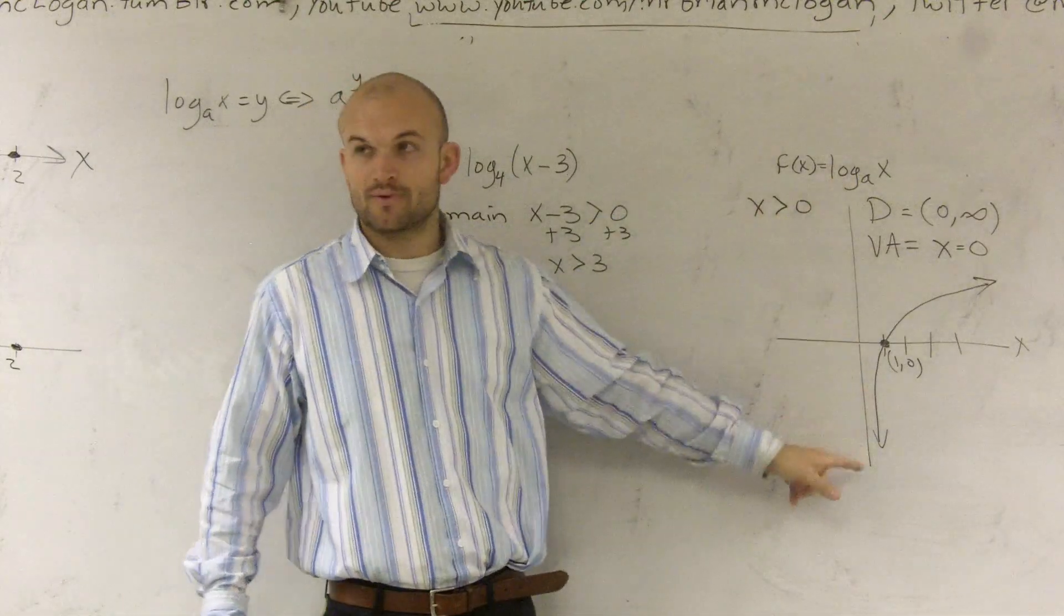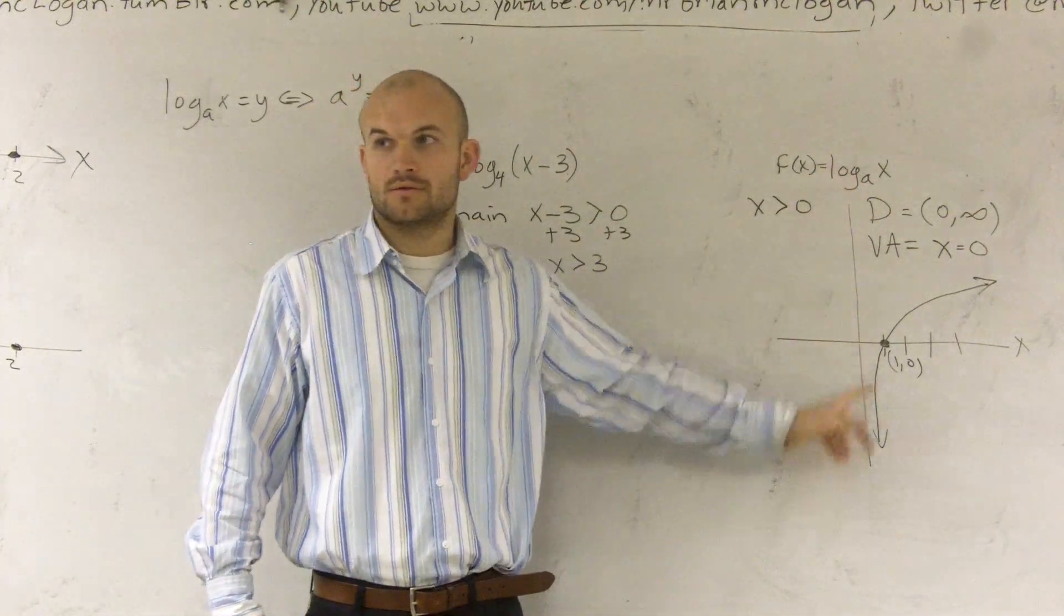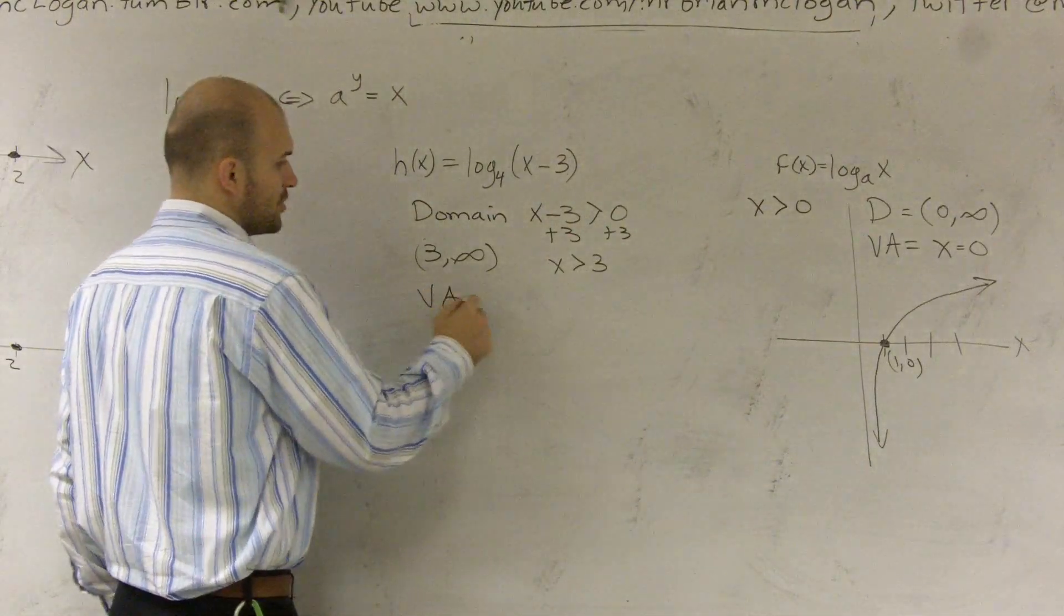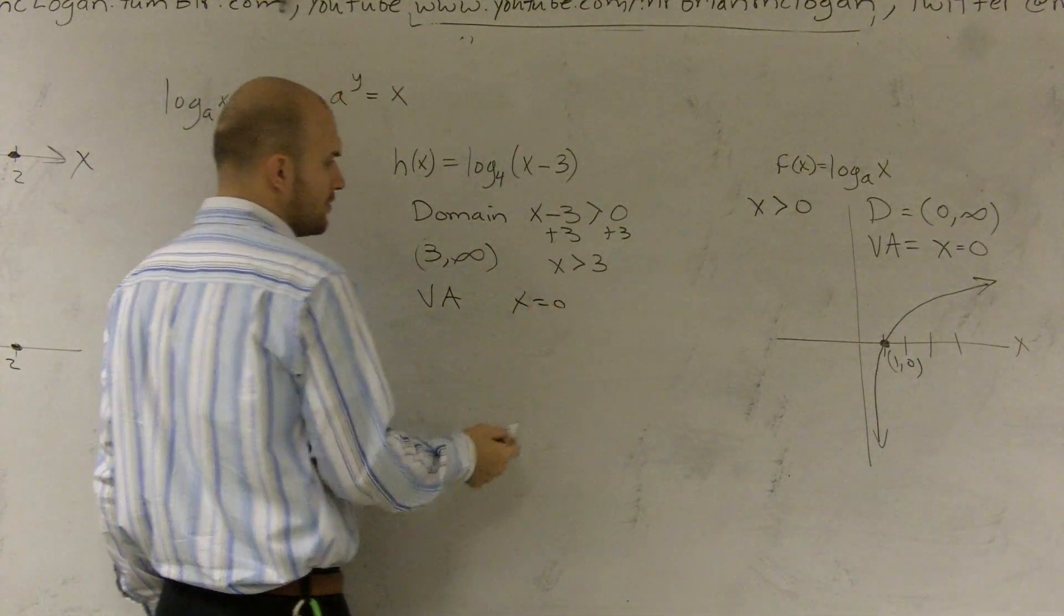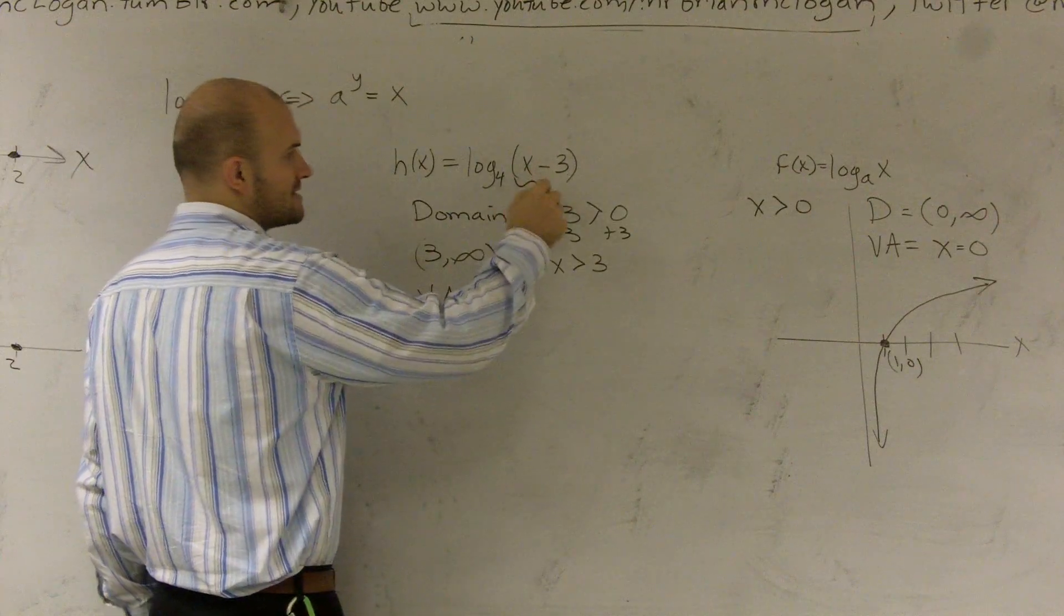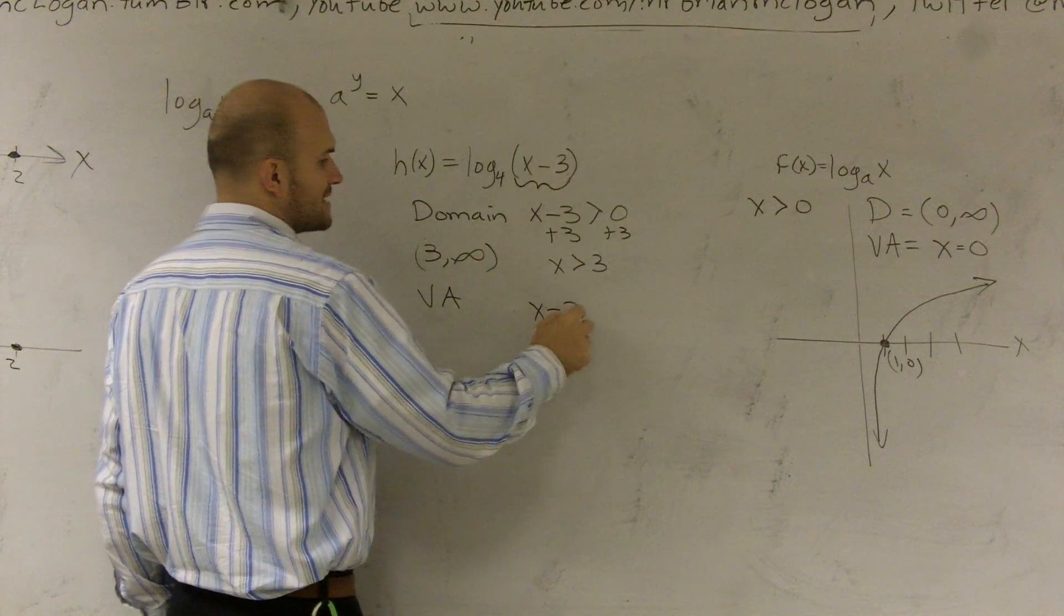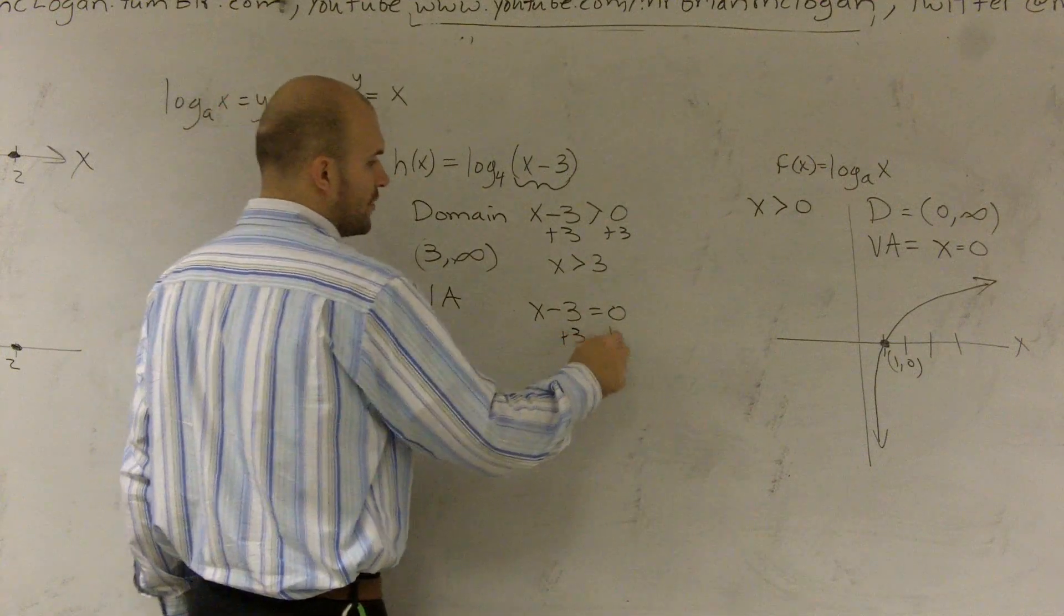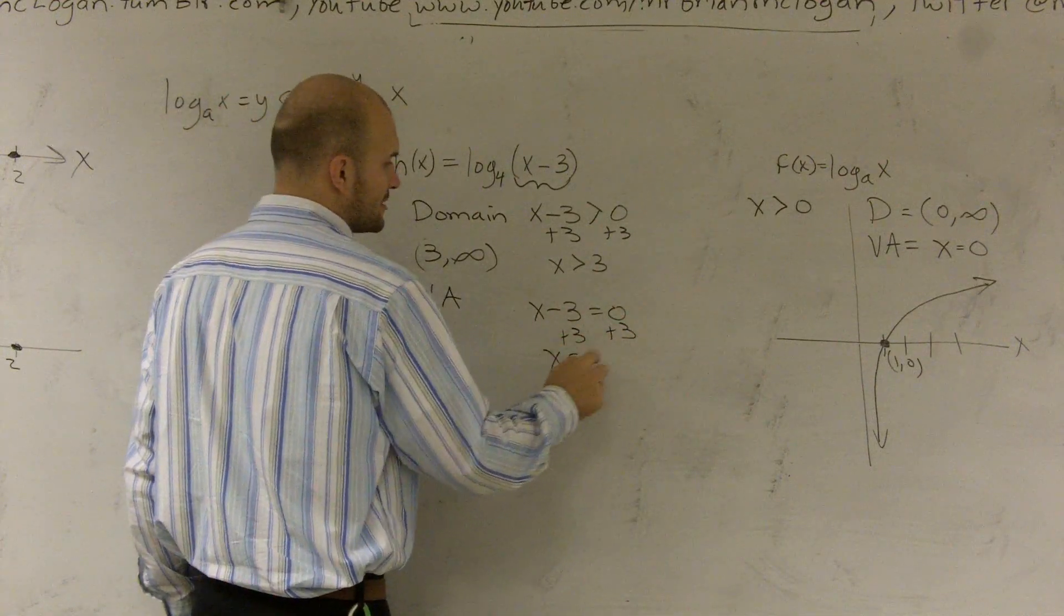What was the asymptote for this? Do you remember? 0. 0, right? x equals 0. So you could also say, if I say the vertical asymptote, we said x equals 0. Well, now I need to have not x equals 0, but let's take what's inside of there, which would be x minus 3 equals 0. So now my new asymptote, vertical asymptote, is x equals 3.